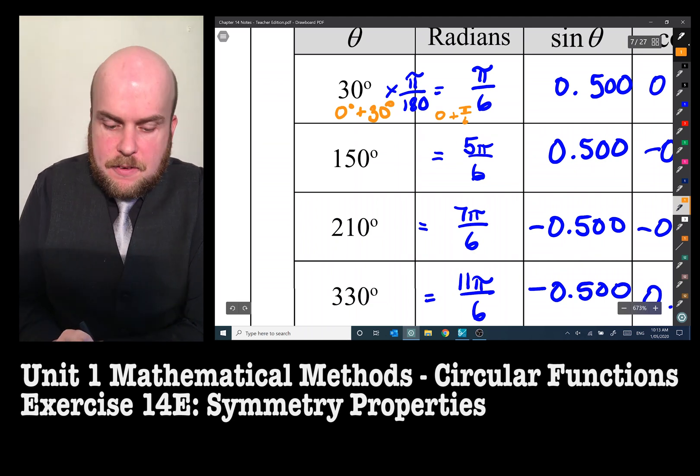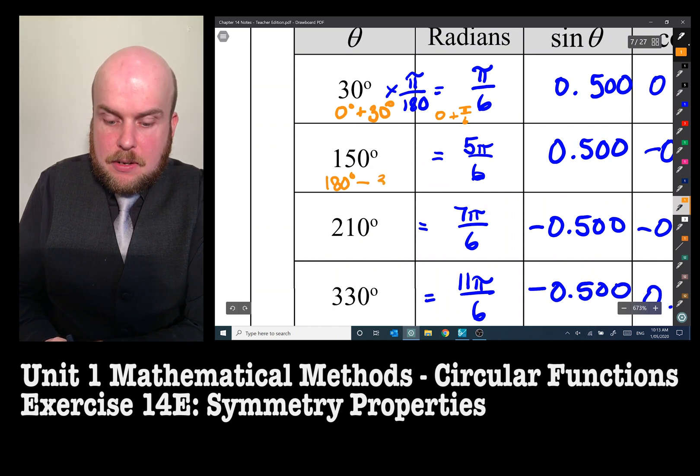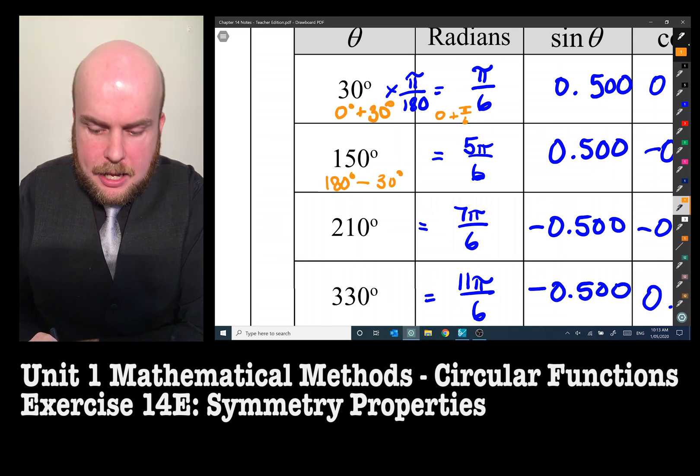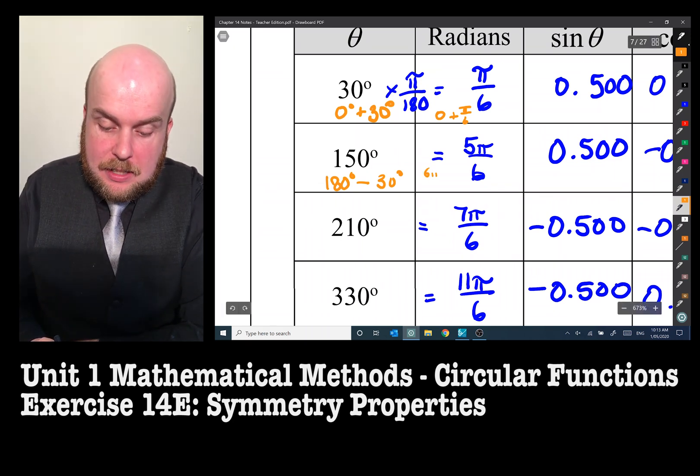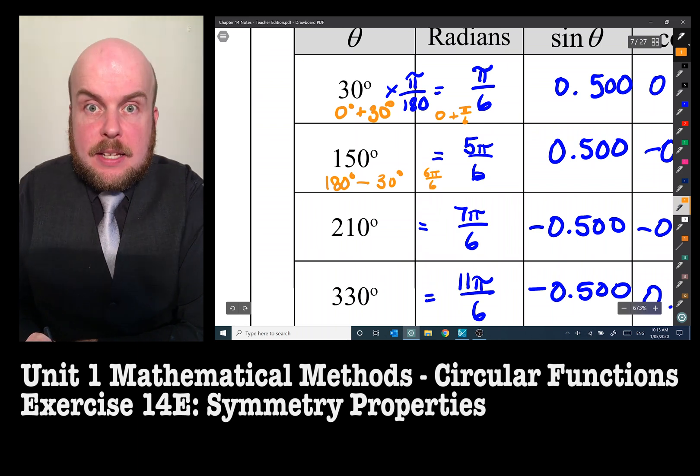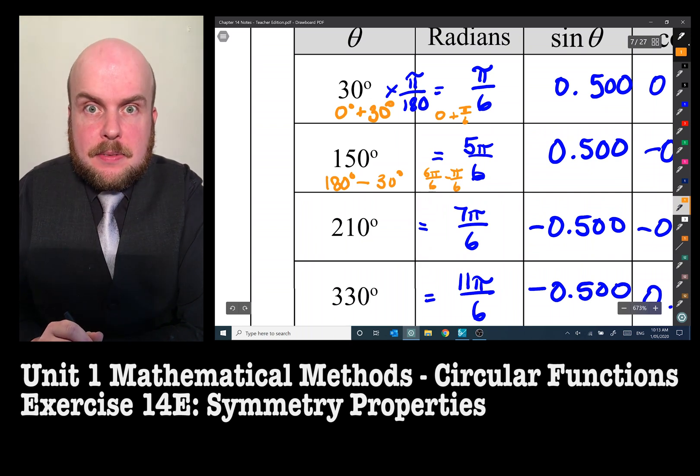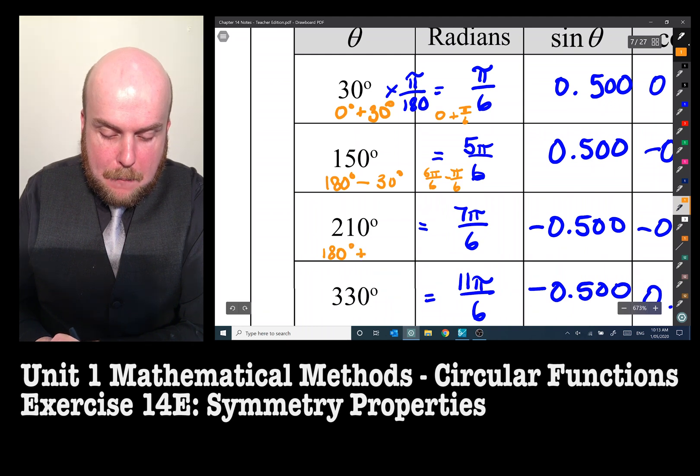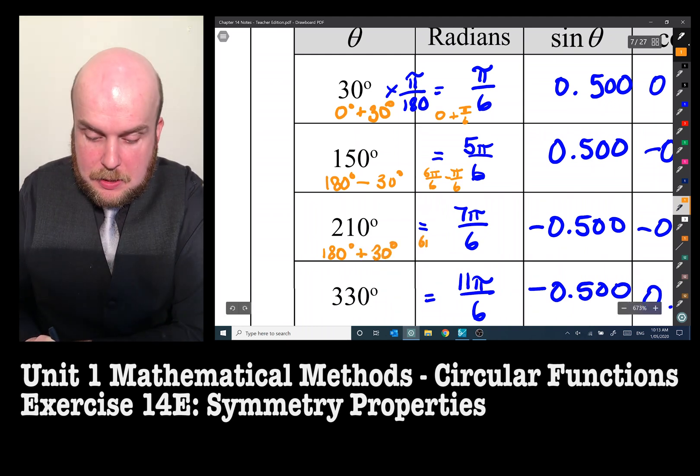150 is the same as saying 180 take away 30 degrees. Or what's 180 degrees in radians? That's π. π can be expressed as saying 6π on 6 because the sixes cancel out, and that would be π minus π on 6.